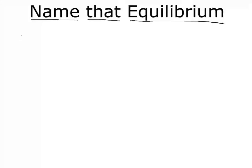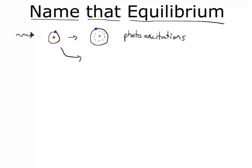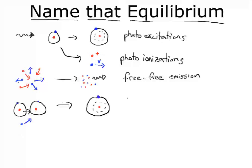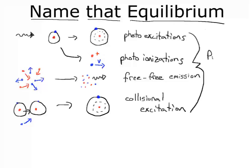Hello, and welcome to today's exciting game of Name That Equilibrium. We've discussed so far a lot of different ways that particles can interact. For example, we've talked about photons hitting atoms to result in an excited atom — photo excitations. We've talked about photons hitting atoms and knocking an electron off — photo ionizations. We've talked about charged particles colliding with each other to generate some photons — free emission. And two neutrals colliding, such as an electron hitting a neutral to produce an excited atom — collisional excitation. These are all the fundamental processes that can contribute to an equilibrium.